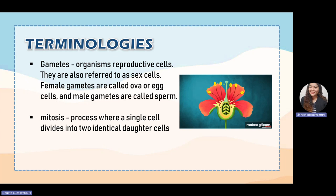Here are some terminologies you should be familiarized with during our discussion. First, gametes — gametes are an organism's reproductive cells, also referred to as sex cells. In females, the gametes are known as ova or egg cells, and the male gametes are called sperm cells.